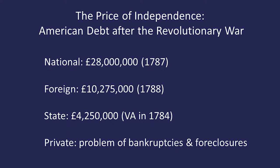America had a frame of government before the Constitution — that was the Articles of Confederation. One of the really difficult problems under the Articles that America faced was debt from the Revolutionary War. There was a national debt of 28 million pounds. The fact that they were still counting money in pounds shows how new and relatively weak the country was. Ten million pounds in foreign debt, most states had debts, and there was a lot of private debt and bankruptcy. Basically, everybody was in debt.